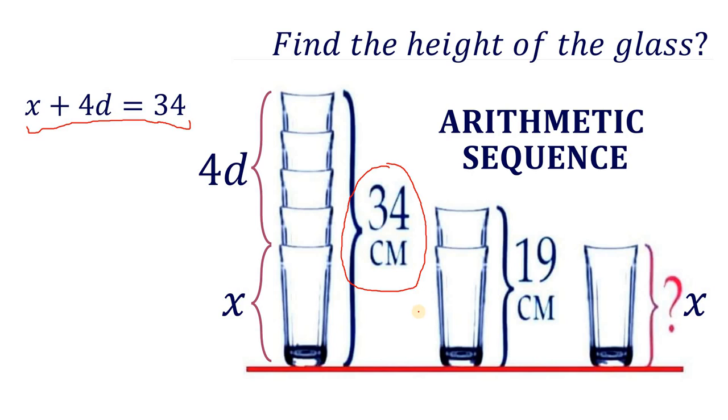Now, our second equation is by using the second stack. We know the height of this glass is x and this is d. Therefore, if we add x and d, we get a total of 19 centimeters or x plus d equals 19.